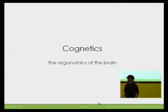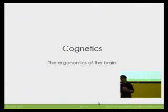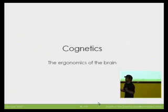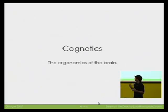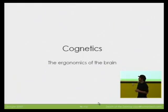Cognetics tells you things like: how many things can you hold in your short-term memory? Seven plus or minus two. If you click a button, how fast do you need something to happen so the user doesn't click again? 250 milliseconds. Can you actually multitask? No — you end up doing task switching and you lose time in between. These are the sorts of things Cognetics helps you understand, and they give you a very good base for making computers which are humane — cognizant of our needs and helpful with our frailties.